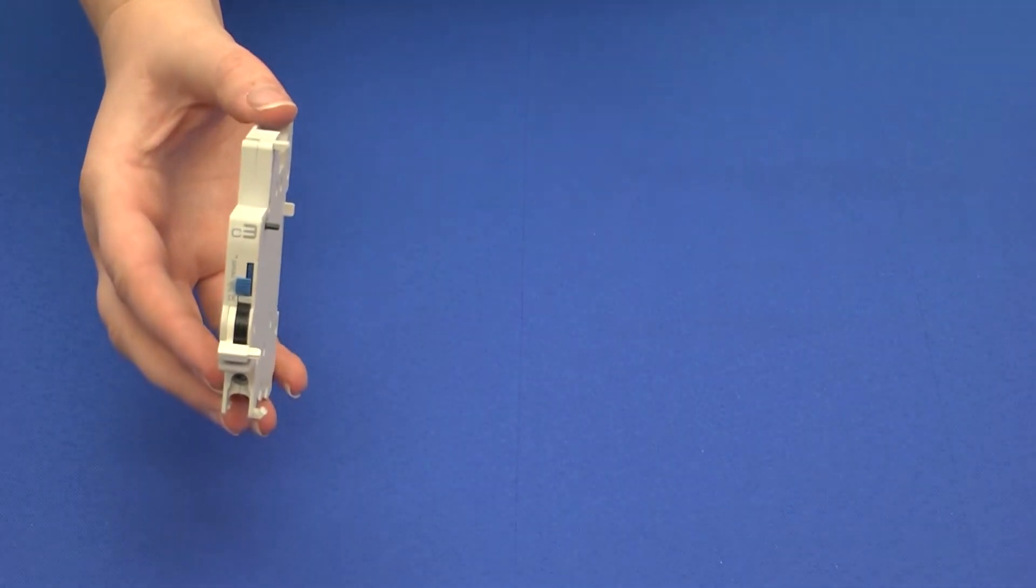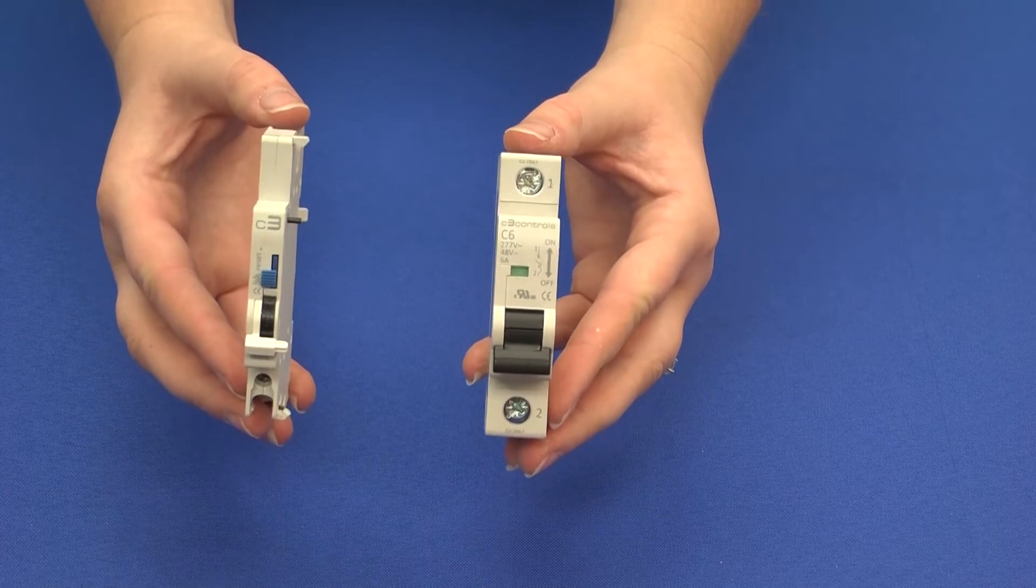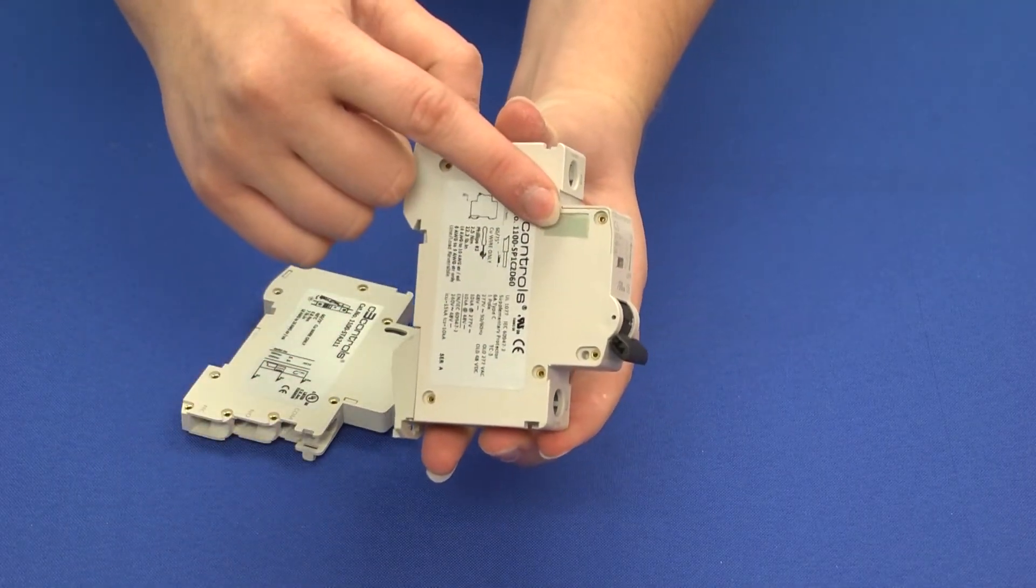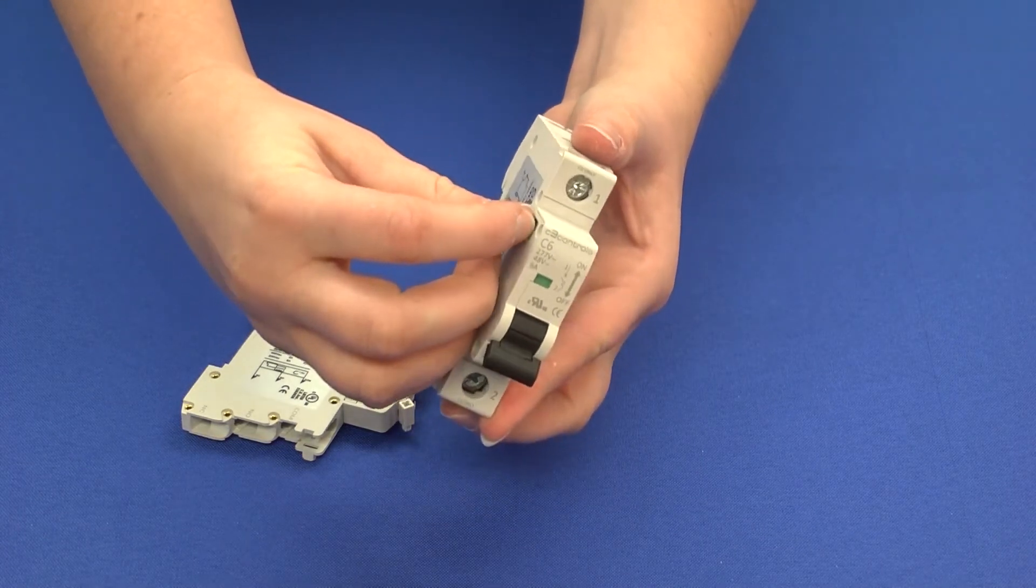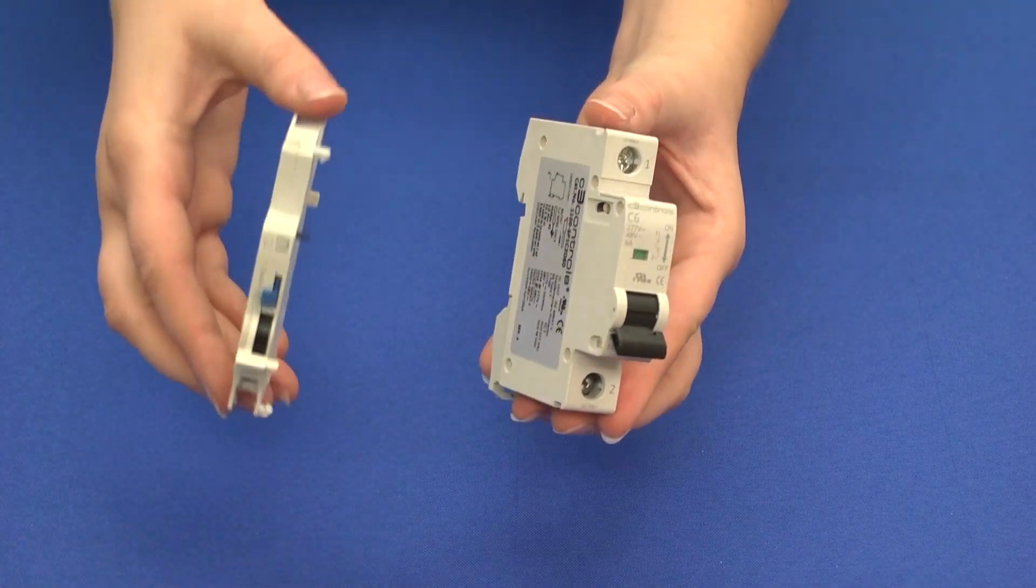Next, we're going to install our alarm auxiliary onto our 1077 supplementary protector in just four easy steps. First, remove the adhesive cover on the side of your MCB. This only applies to the regular auxiliary and the alarm auxiliary.